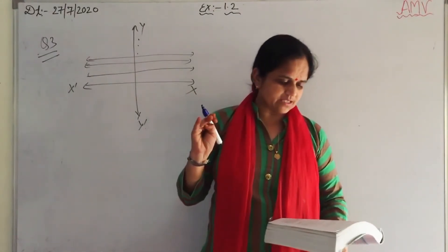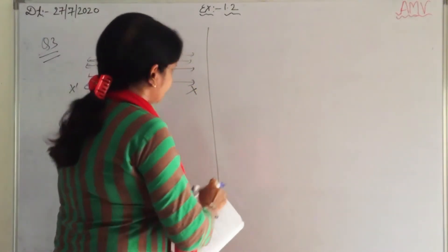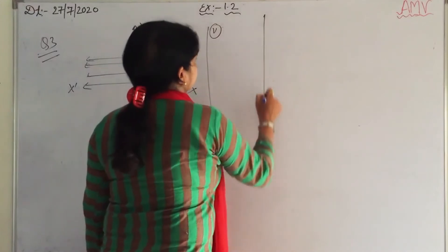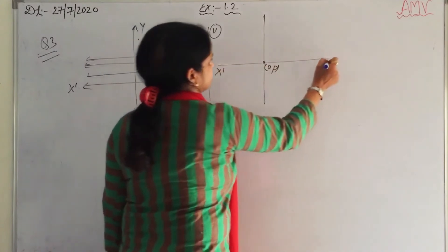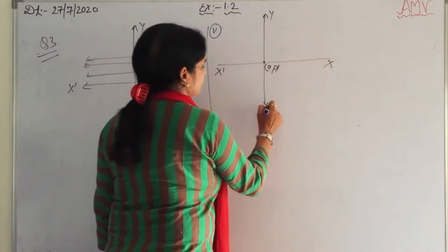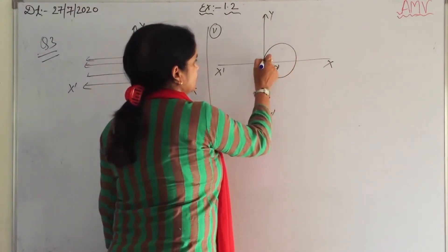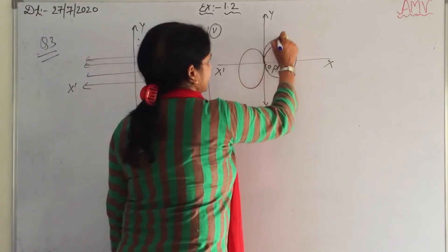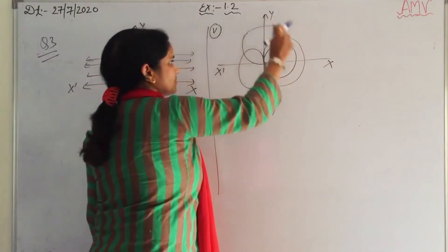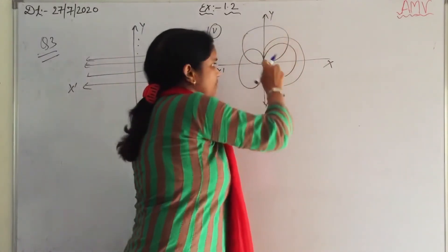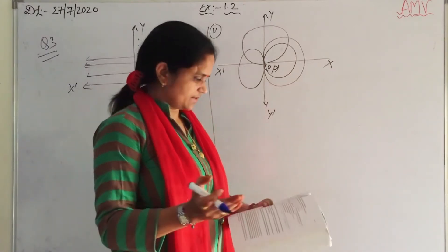Next: set of circles passing through the origin (0, 0). In the coordinate plane, one circle can pass through the origin here, another one there, and so on. There may be so many circles passing through the origin (0, 0). So it is an infinite set.